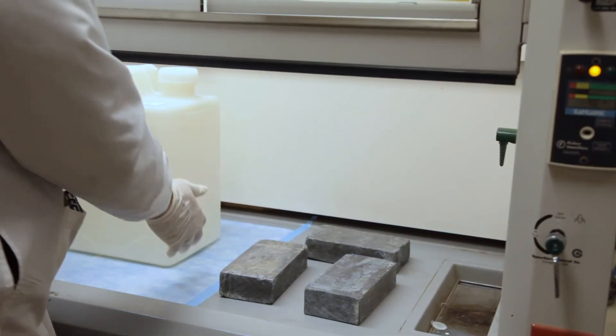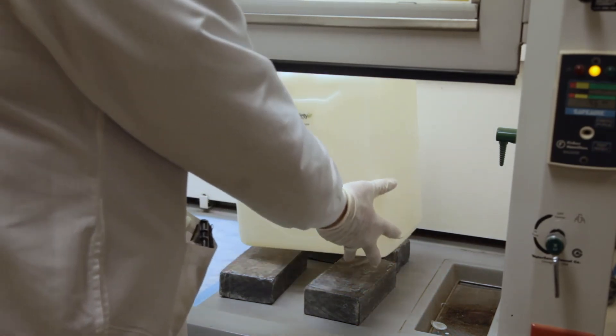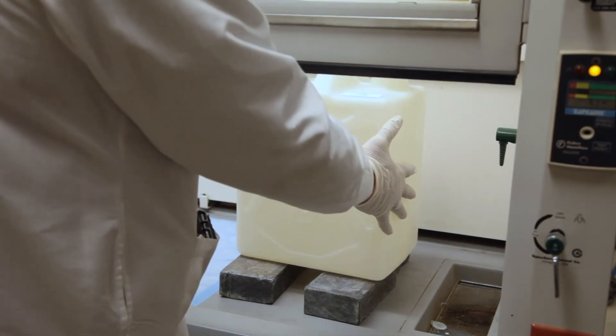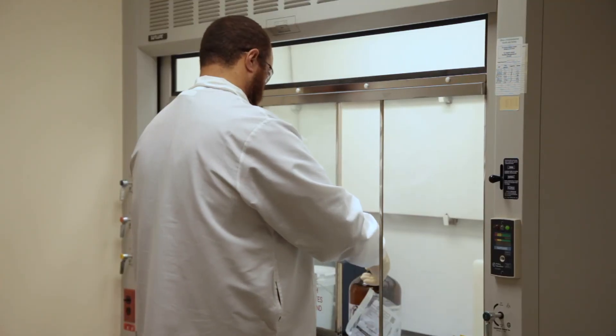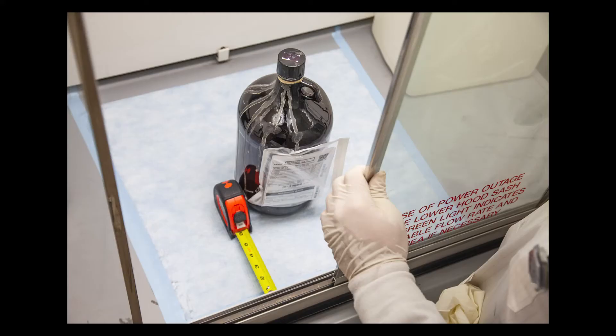Bulky items and equipment can impede airflow and fume hood function. Elevate bulky items 2-3 inches by placing these items on blocks. Work as far back as reasonable inside of a fume hood. It's best to keep all chemicals and equipment at least 6 inches from the face of the hood.